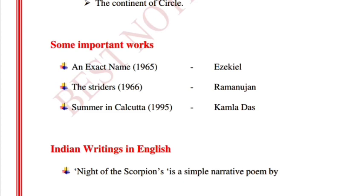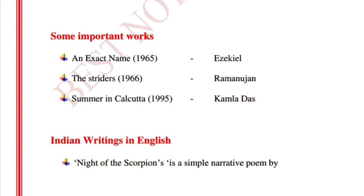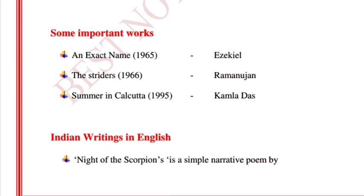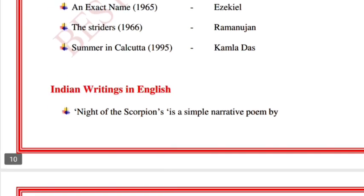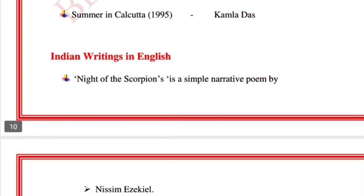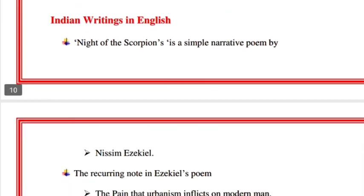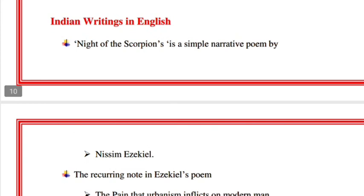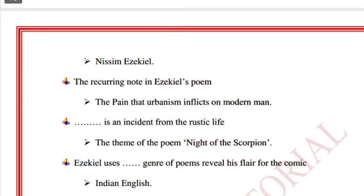'An Exact Name' is written by Nissim Ezekiel. 'The Strider' is written by Ramanujan. 'Summer in Calcutta' is by Kamala Das. 'Night of the Scorpion' is a simple narrative poem by Nissim Ezekiel.